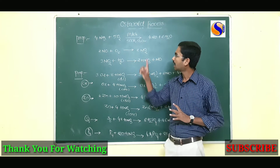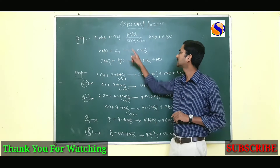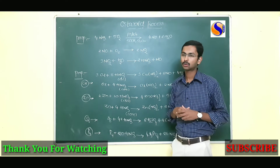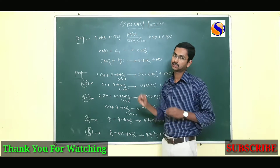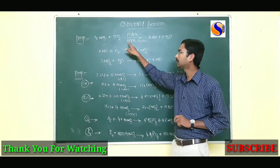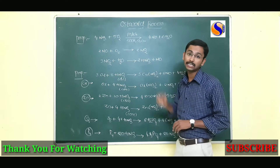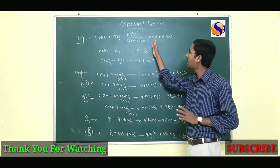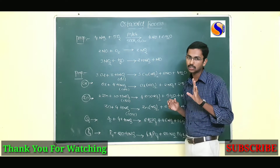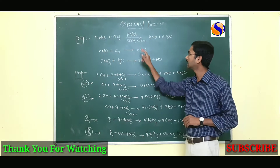First, ammonia is the starting compound, which on oxidation gives nitric oxide by using a catalyst — platinum or rhodium gauze. By using platinum or rhodium catalyst wire gauze, ammonia undergoes oxidation to form nitric oxide at a temperature of 500 Kelvin and 9 bar pressure. These are the optimum conditions to prepare nitric oxide.